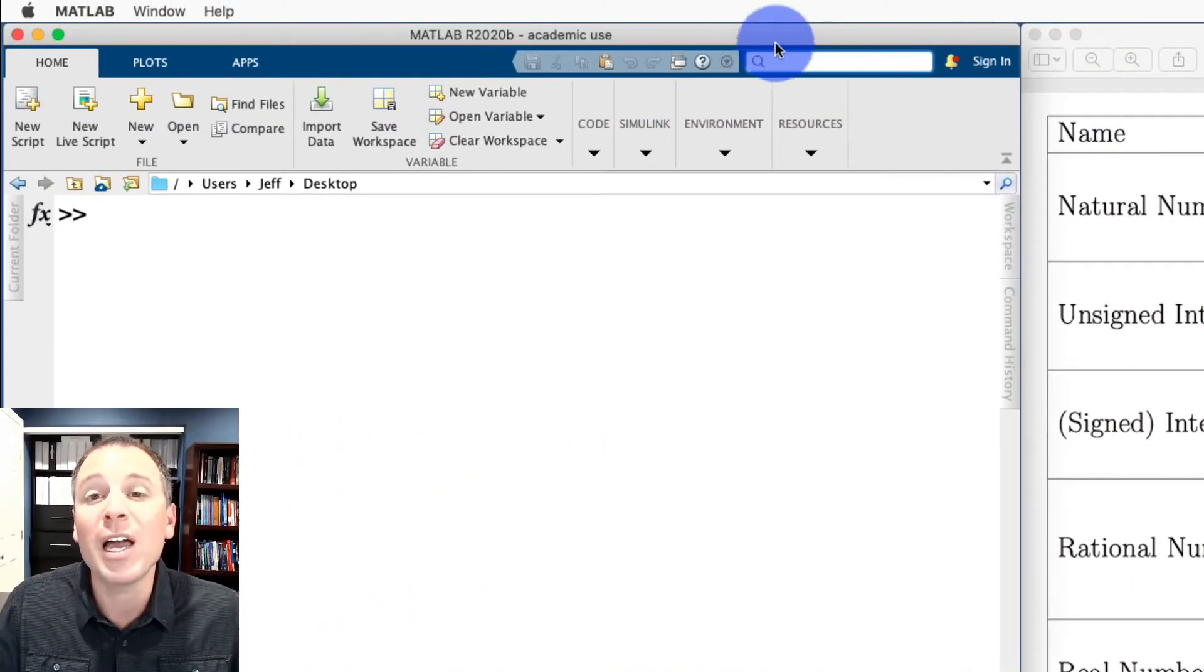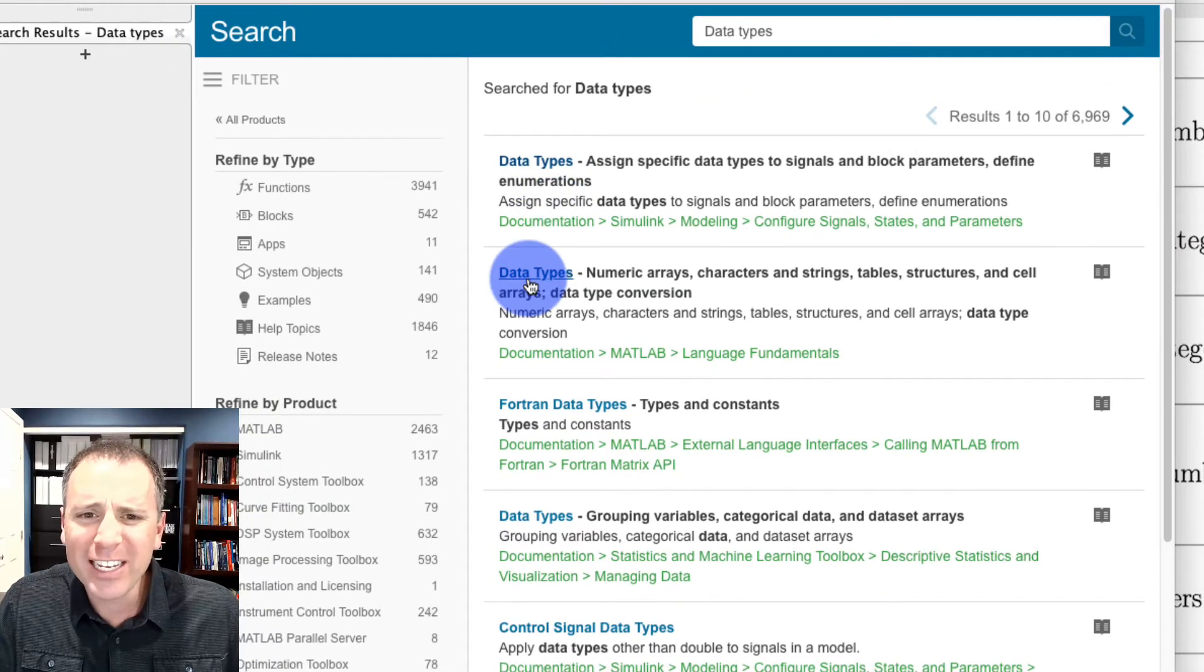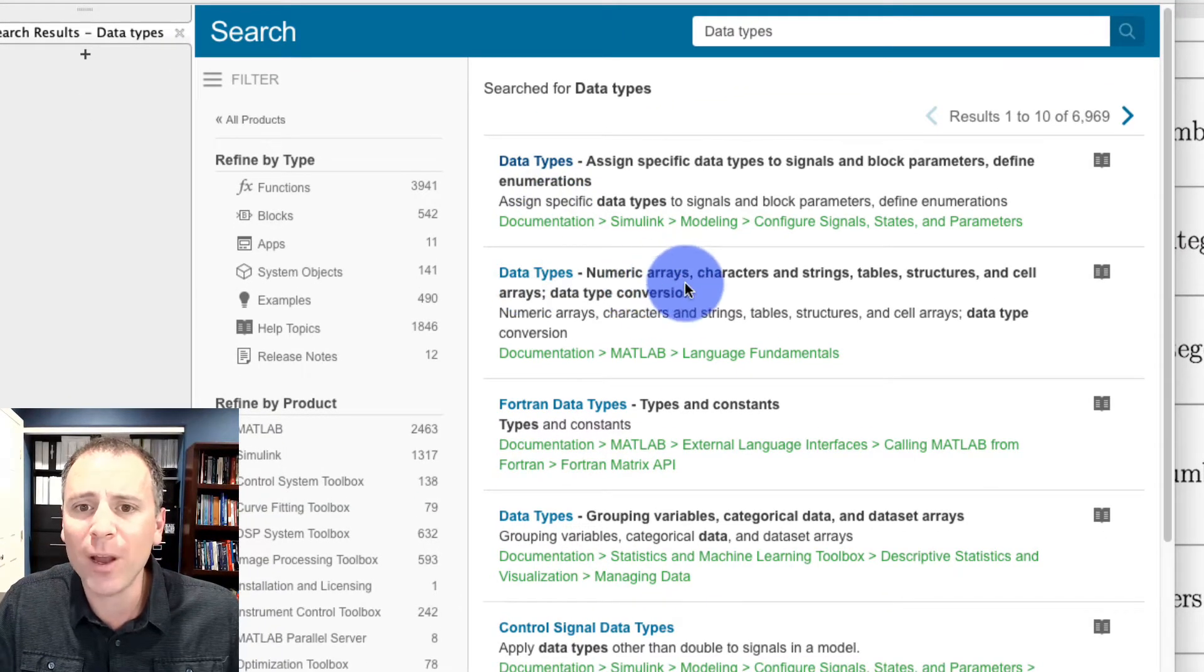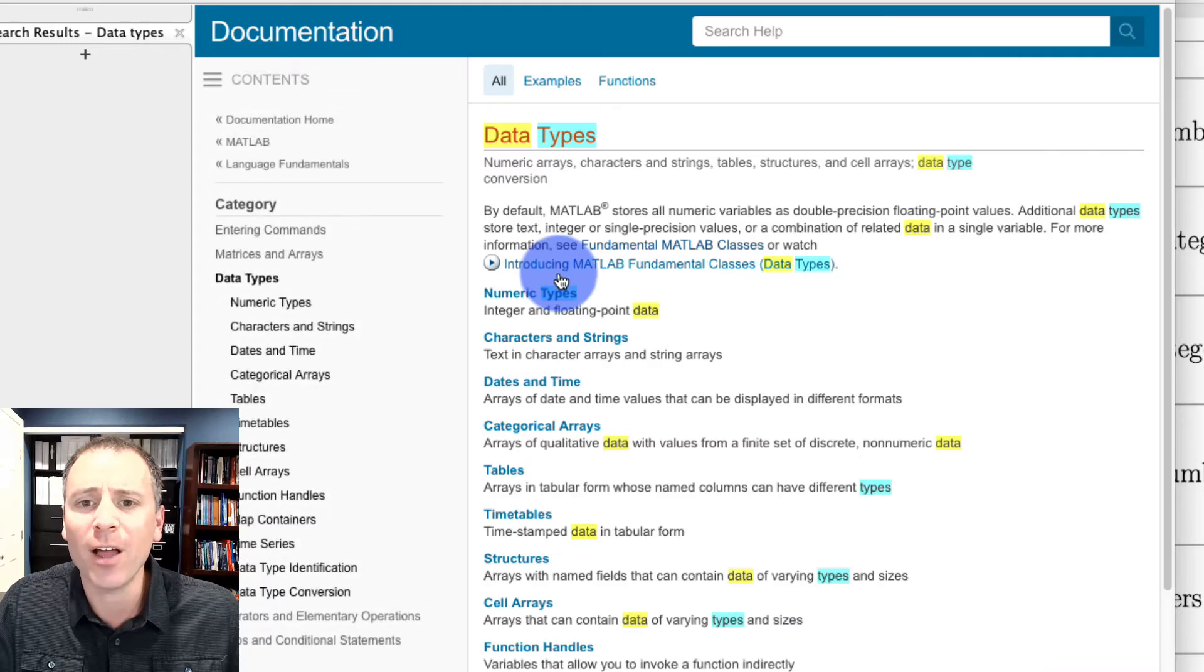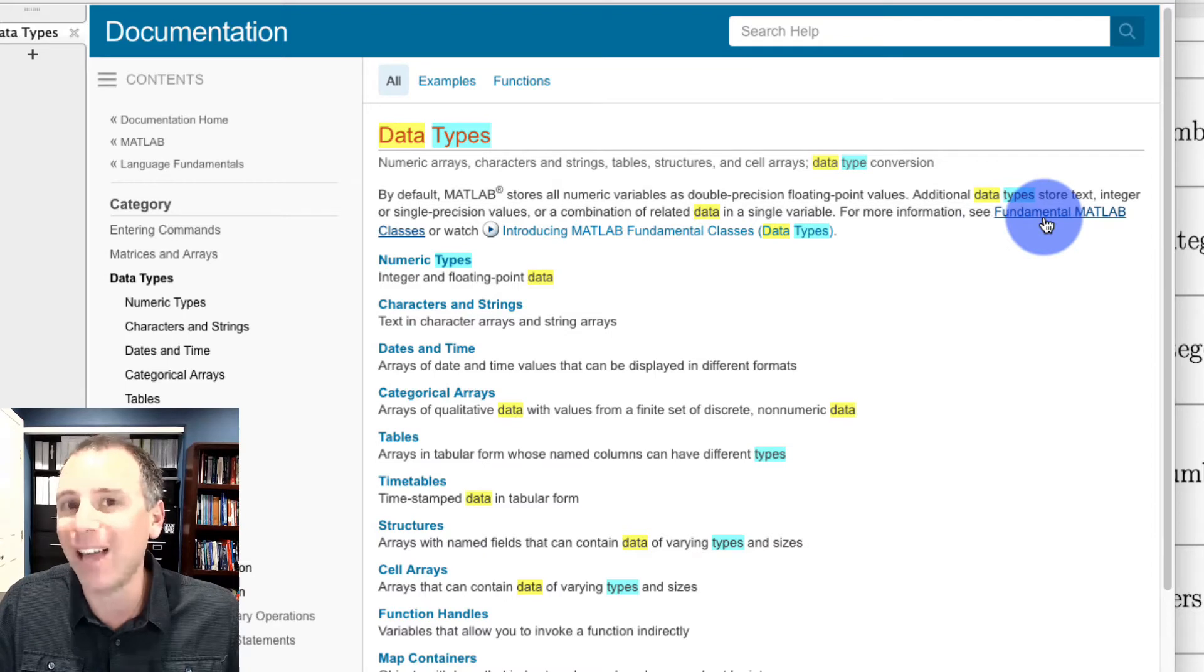Let's go up to the documentation search bar and type in data types and then push enter. Let's go in this case down to the second result, which is numeric arrays, characters, strings, etc. That pulls up the exact same discussion that we've seen previously. We're going to click on fundamental MATLAB classes.